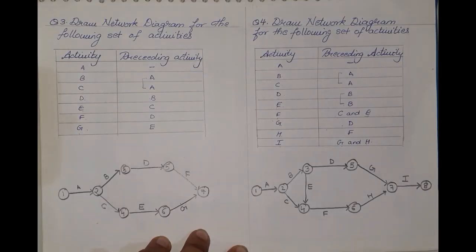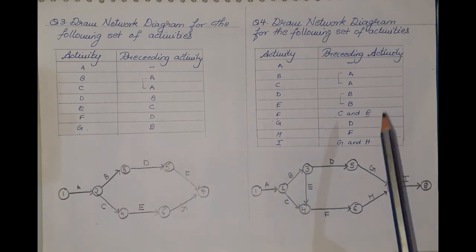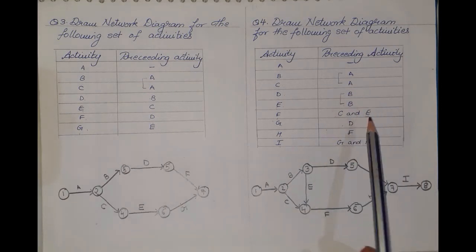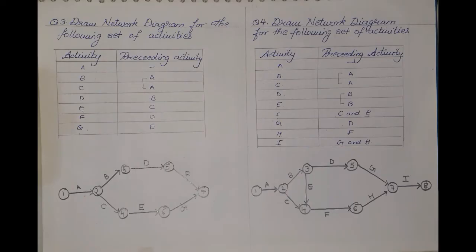The network diagram started from event one and ended at event eight. This is how we solve sums based on network diagrams where complex preceding activities are given — merging and bursting together. This was question number four based on drawing a network diagram. We have one last sum to complete, so now let us see how to solve it.